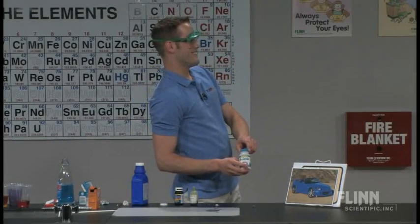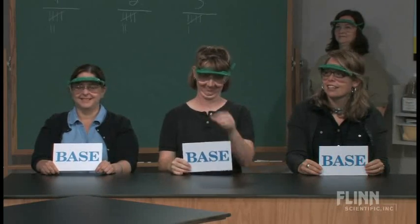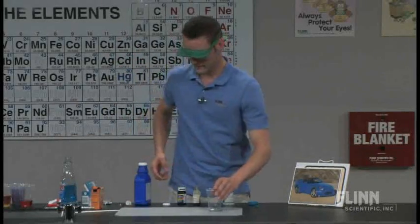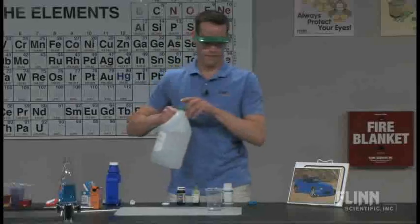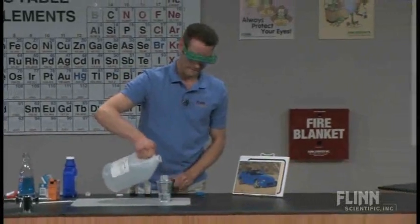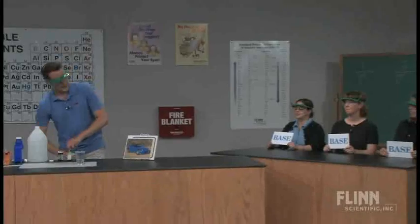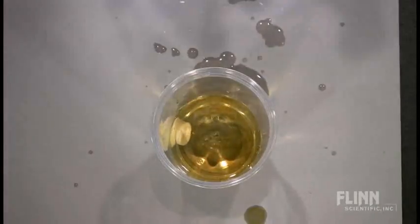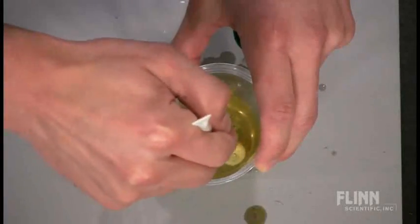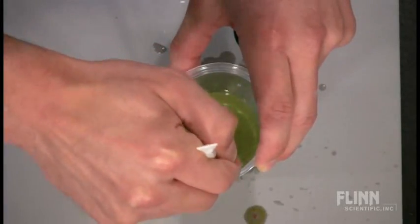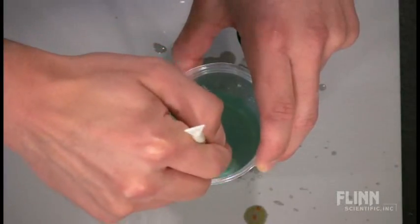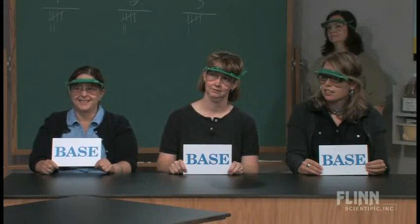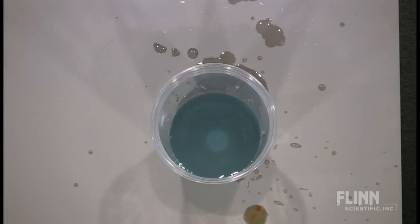Our next product up on the line: Rolaids — how do you spell relief? R-O-L-A-I-D-S. So we have Rolaids. It looks like everyone's going to say base. Right now it's acidic, but let's see what happens with a little bit of stirring. Rolaids are oftentimes calcium or aluminum hydroxide, so they're not very soluble in water — which is a good thing. You don't actually want your antacids to be highly soluble in water, because you don't want to neutralize all of your stomach acid. So it does, in fact, come out base with some stirring. All of our contestants get another point.